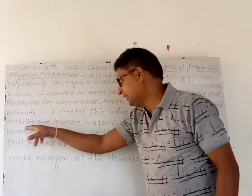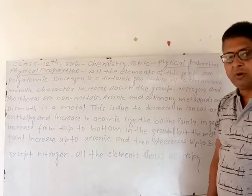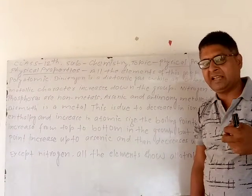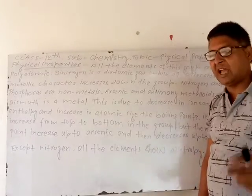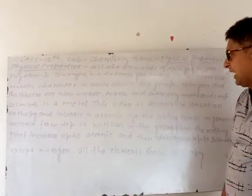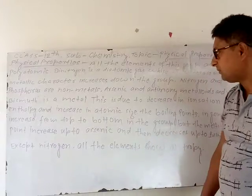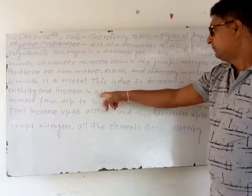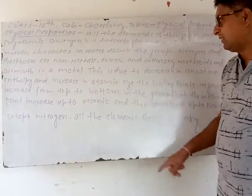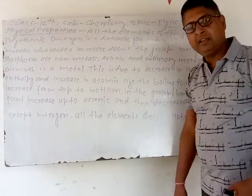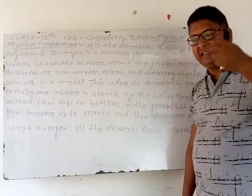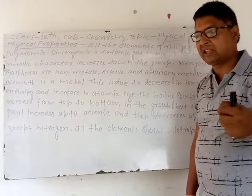Moving down Group 15, ionization enthalpy decreases. So in Group 15, as we go from top to bottom, ionization enthalpy decreases, and atomic size increases.